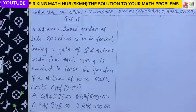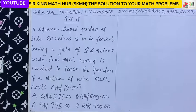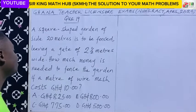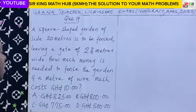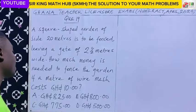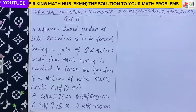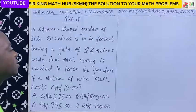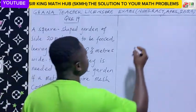Question 19. A square-shaped garden of side 20 meters is to be fenced, leaving a gate of 2.5 meters wide. How much money is needed to fence the garden if a meter of wire costs 10 Ghana cedis?